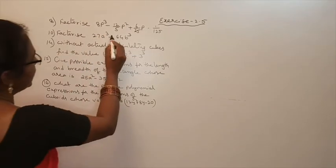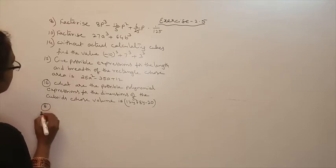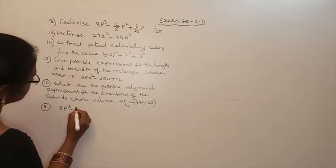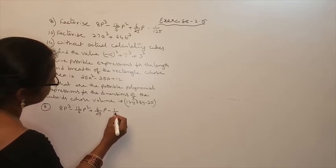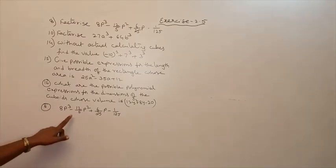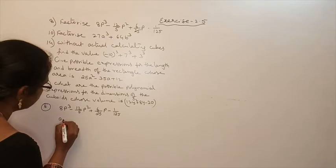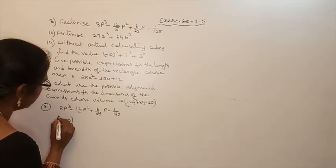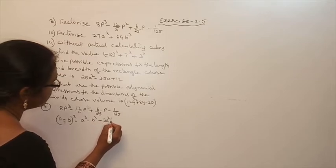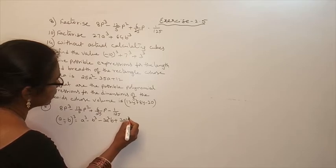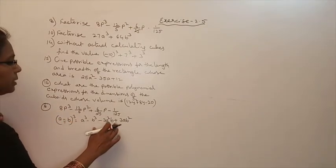The first problem: factorize 8p³ minus 12/5 p² plus 6/25 p minus 1/125. This expression is in the form of a³ minus 3a²b plus 3ab² minus b³. The identity here is: a minus b whole cube is equal to a³ minus 3a²b plus 3ab² minus b³. As per this identity, we have to write the factorization.